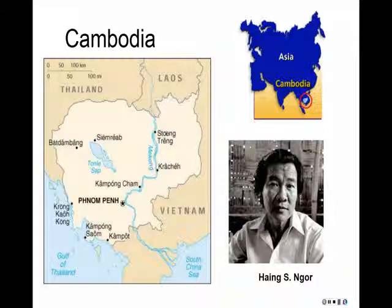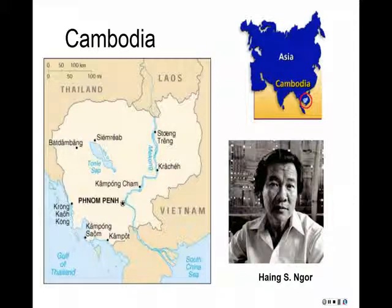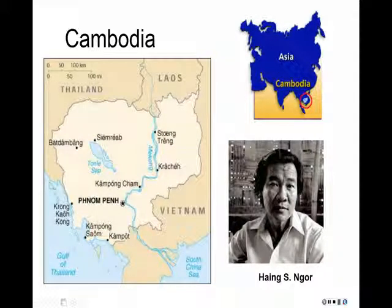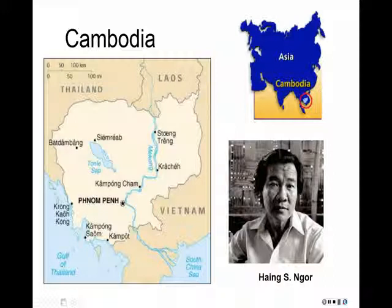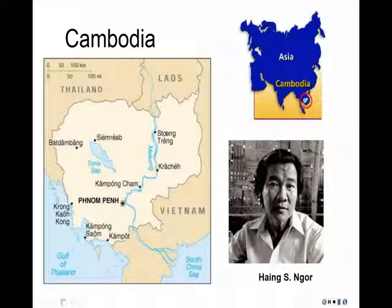This particular genocide occurs in the 1970s, from 1975 to 1979, and it happens at the end of the Vietnam War, occurring right here on the right, and this is the country of Cambodia. This is its place geographically, and this is Heng Nyor, who ends up coming to the United States and starring in the movie, where he portrays someone similar to himself.